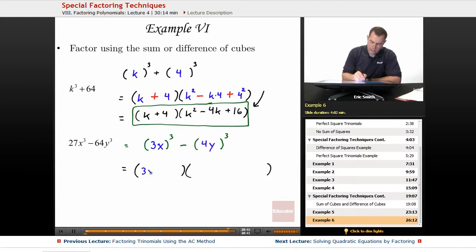So our pieces are 3x and 4y. Be very careful as you put in those pieces in the much larger one. Remember, we have 3x squared, we have 3x times 4y, and we have 4y, all of that squared.